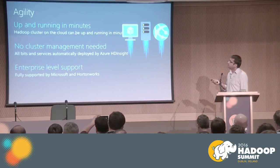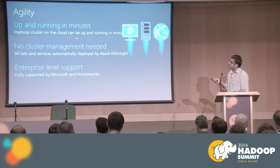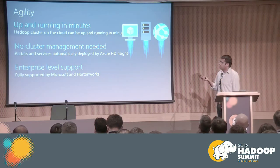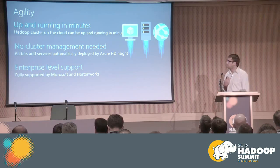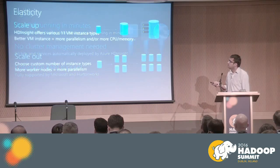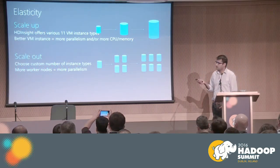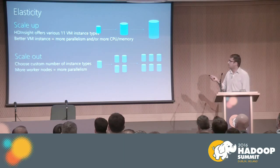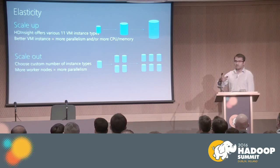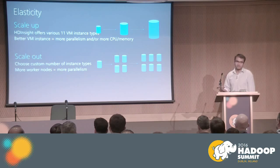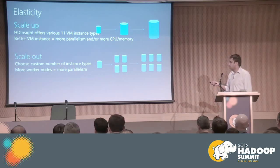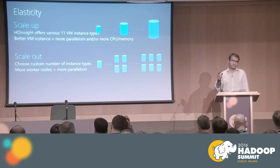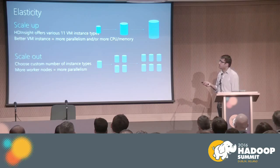Agility: you can be up and running in minutes. Once you ask us to start a Hadoop cluster, it runs in minutes with absolutely no cluster management needed — we deploy all bits and services and provide support. For elasticity, you can scale up or scale out. We offer 11 different VM types with different memory and CPU. You can go from one node to thousands of nodes. Once a cluster is running, we provide a slider bar to reduce or increase cluster size.